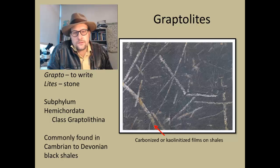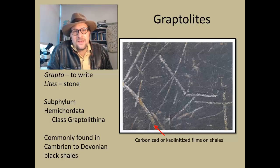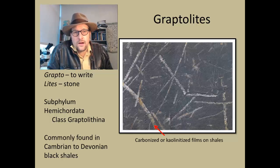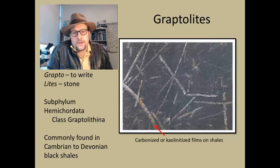They are often found as fossils in units that don't necessarily have very many other types of fossils. This is the first group of invertebrates we are looking at with a fossil record that doesn't have a calcified skeleton — no calcium carbonate, no calcite, no aragonite, like we saw with the mollusks and will see again with the arthropods. Graptolites are actually carbonized or kaolinized films on the shales — remnants of the organic matter that composed their bodies, preserved in the rock record.